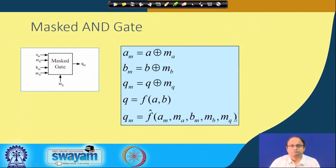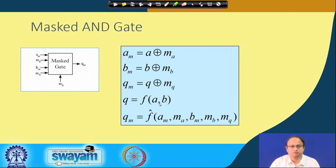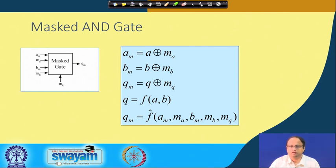Let us start with a very simple example of masking a fundamental gate — the AND gate. In the AND gate there are two inputs a and b, and you give an output q, where q is essentially a function of a AND b and a and b are your actual single-bit inputs. In a normal unmasked circuit we process on a and b, so the power consumption, since it depends upon a and b, would leak information about a and b — which is what we have seen when studying DPA.